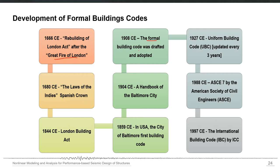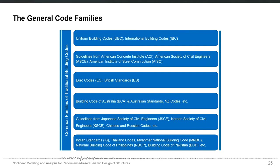The very first formal building code was drafted and adopted in 1908. We also have the Uniform Building Code in the context of seismic design and other load design in 1927, and it was updated every three years. The last version of the Uniform Building Code was in 1997, and then the International Building Code started after that. We also have ASCE 7 from the American Society of Civil Engineers, and from 1997 onwards the International Building Code is also updated every three years.